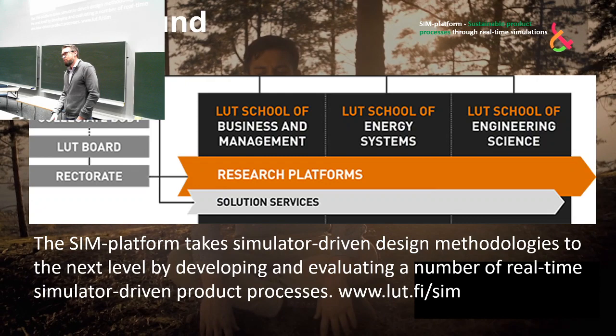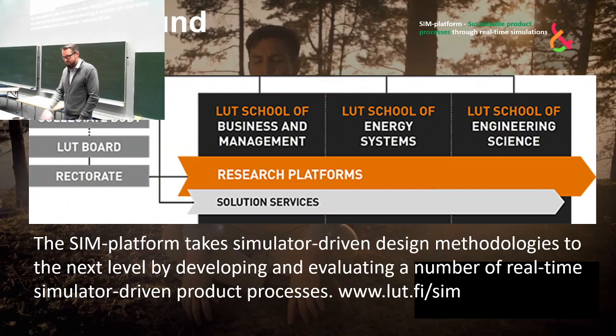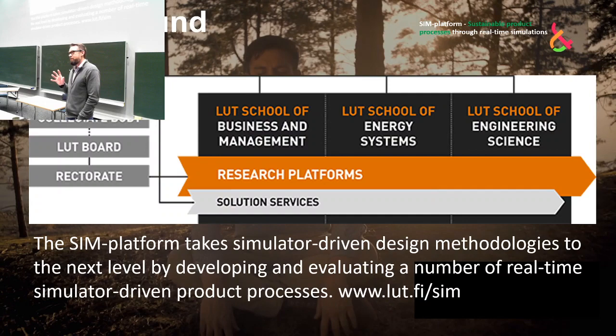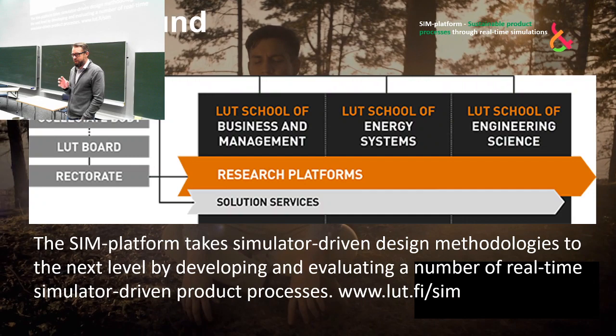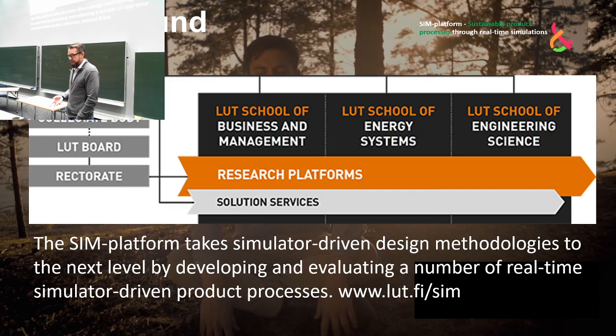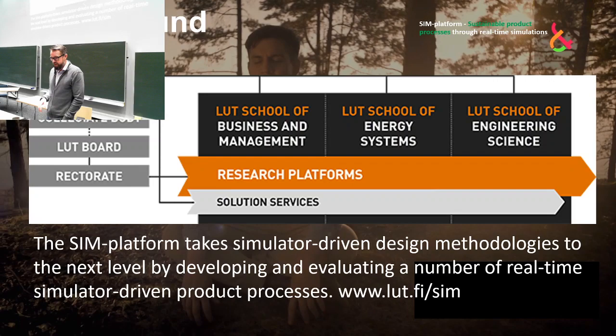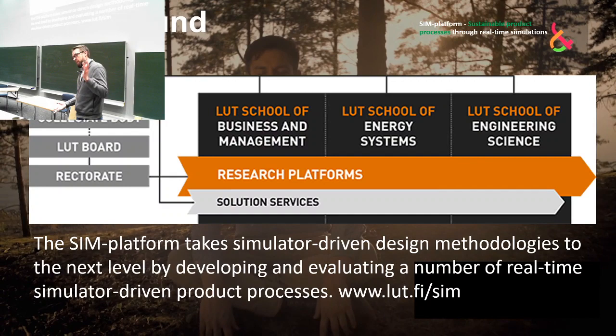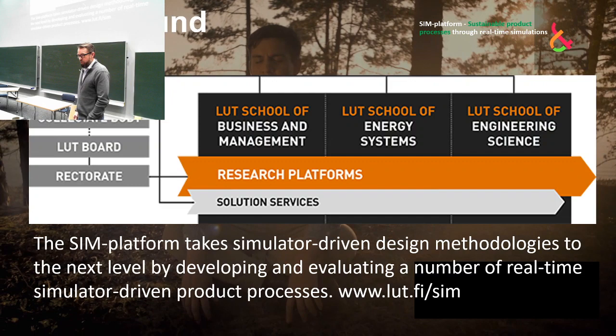Usually what follows a new president or rector is a new organization, and that's exactly what happened at LUT. The rector at the time wanted to organize the university into three schools: LUT School of Business and Management, LUT School of Energy Systems, and LUT School of Engineering Science.